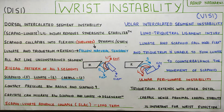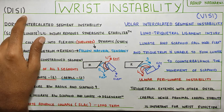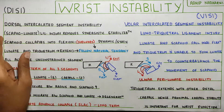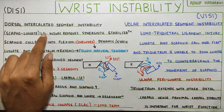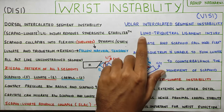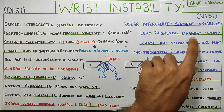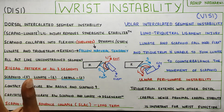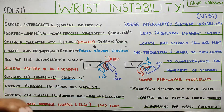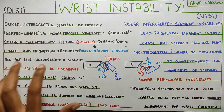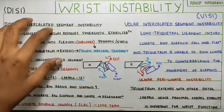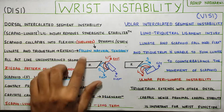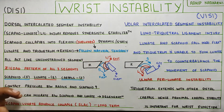The main difference between DISI and VISI is that DISI has a scapholunate ligament injury, whereas VISI has a lunotriquetral ligament injury. That is the main difference. Because of the different ligament injury, the presentation and mechanics will be different. This diagram looks pretty complex, but once I explain it, it will look like a piece of cake.